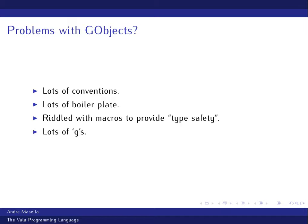Another problem with the whole GObject framework is you type 'g' a hell of a lot. You don't use ints and chars anymore; you use gint and gchar because that makes certain guarantees about sizes on various platforms. I want to see the GNOME desktop programmers' keyboards — I'm sure the 'g' key is all worn through.